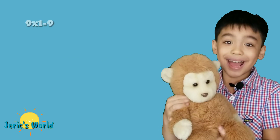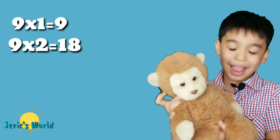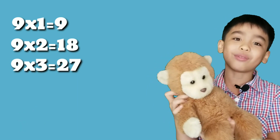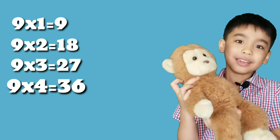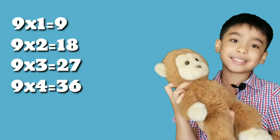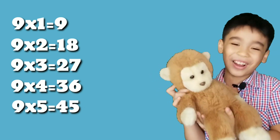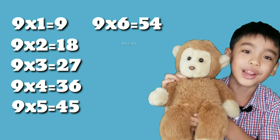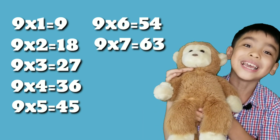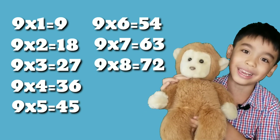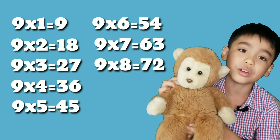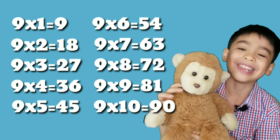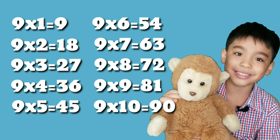9 times 1 equals 9. 9 times 2 equals 18. 9 times 3 equals 27. 9 times 4 equals 36. 9 times 5 equals 45. 9 times 6 equals 54. 9 times 7 equals 63. 9 times 8 equals 72. 9 times 9 equals 81. 9 times 10 equals 90.